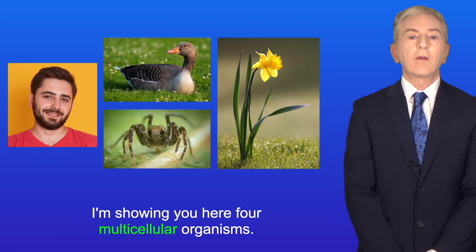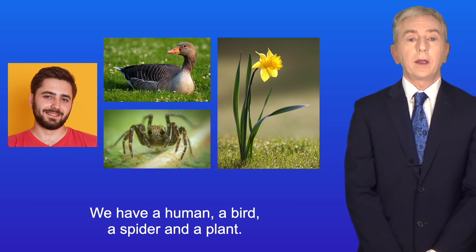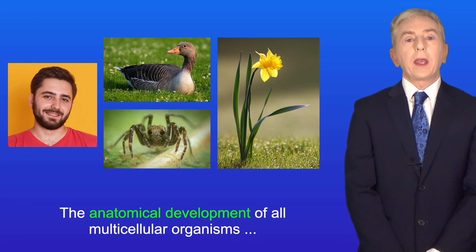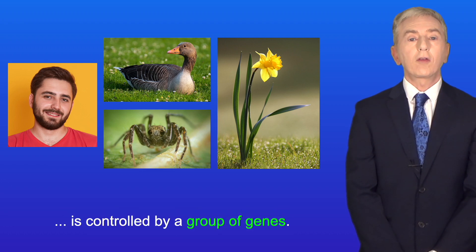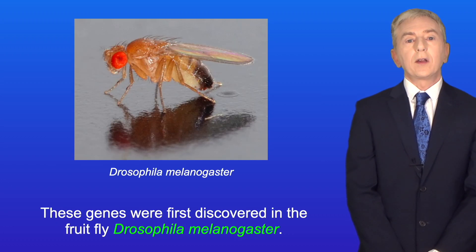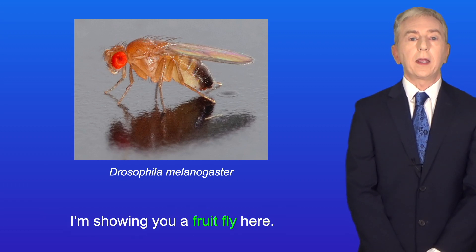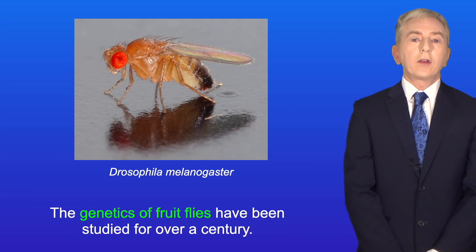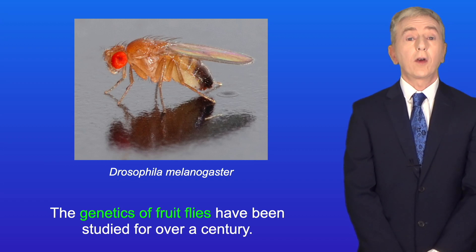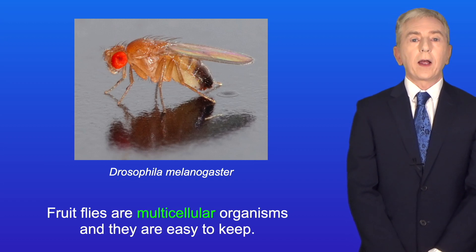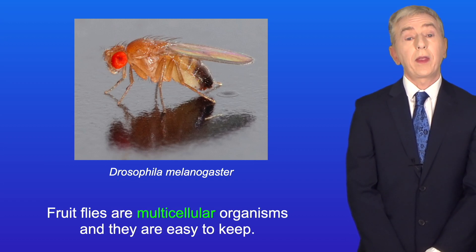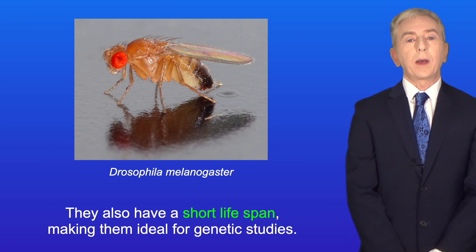Here are four multicellular organisms: a human, a bird, a spider, and a plant. The anatomical development of all multicellular organisms is controlled by a group of genes. These genes were first discovered in the fruit fly Drosophila melanogaster. The genetics of fruit flies have been studied for over a century. Fruit flies are multicellular organisms and they're easy to keep. They also have a short lifespan, making them ideal for genetic studies.